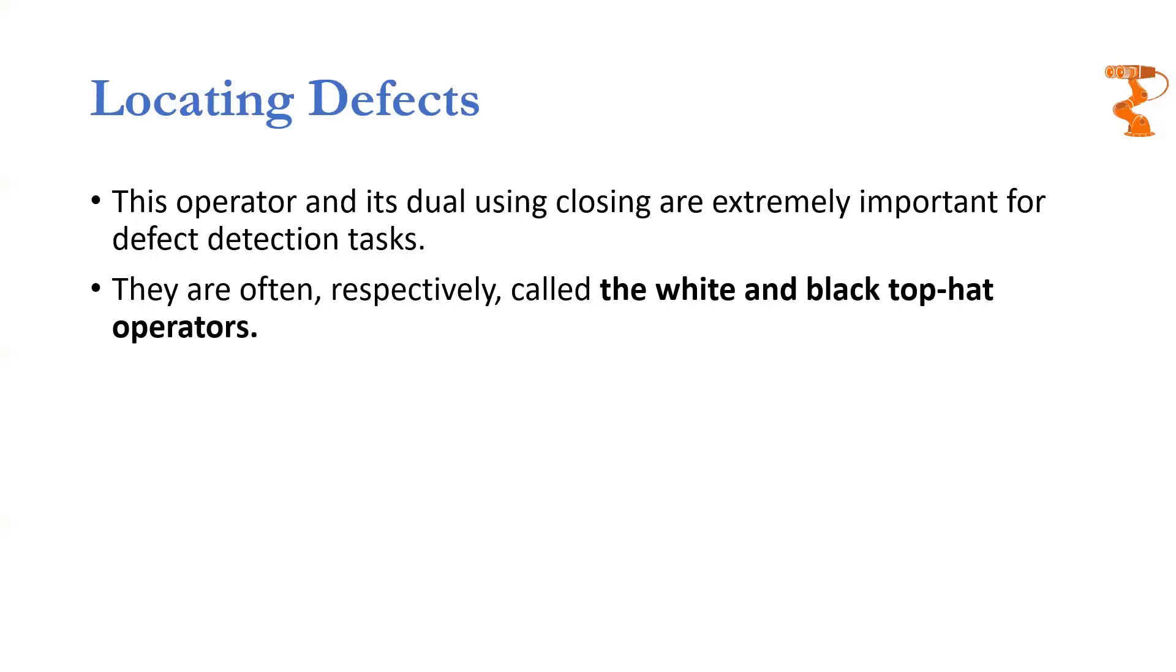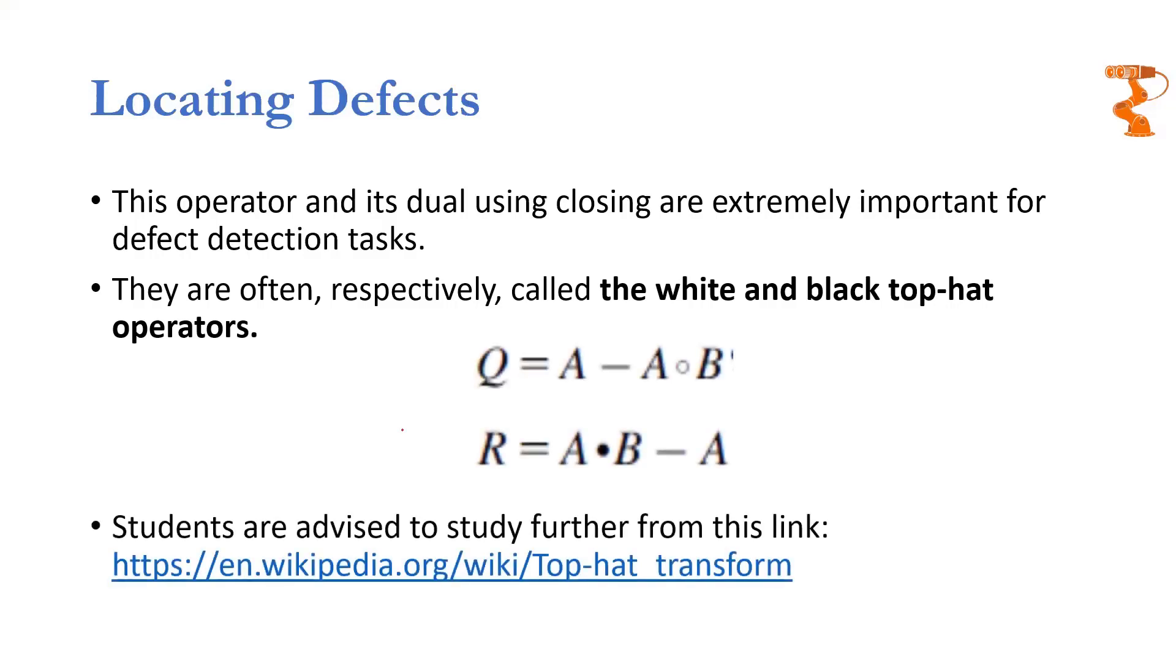And in fact, these two top hat operators are called white and black top hat operators. This one was what we studied in the last slide, and this one is the dual of it. It is using the closing of the original object with some structuring element and then subtracting the original image from it. So you will be left with all the gaps present. The gaps which the closing removed from the image will be present in R, and you can readily know where are the gaps, what is the size of the gap, what is the quantity of the gap, etc.